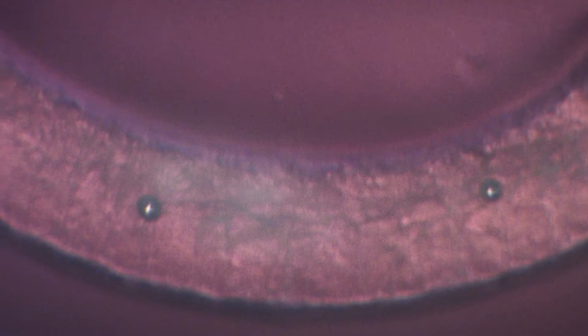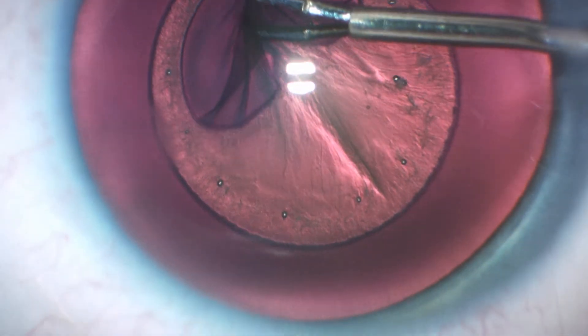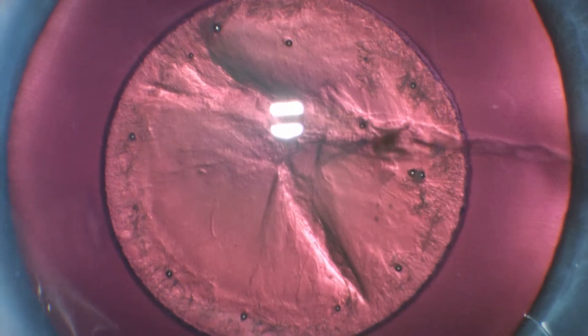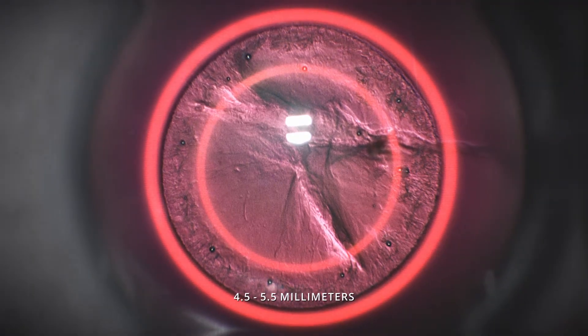Let's take a closer look. The circular capsulotomy has blue stained edges. The central capsule is removed and this completely circular capsulotomy provides the foundation for perfect surgical outcomes.